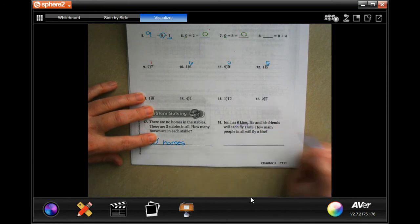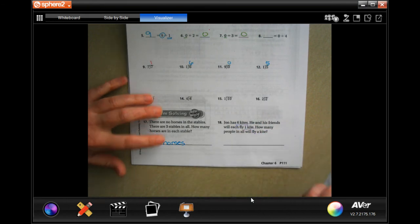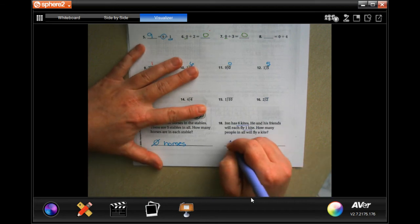John has six kites. He and his friend each fly one kite, six times one. How many people will fly a kite? Six people.